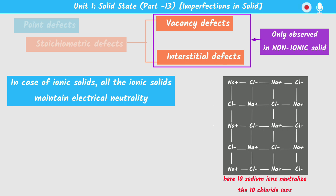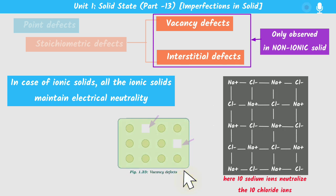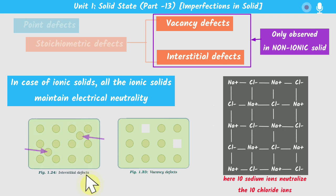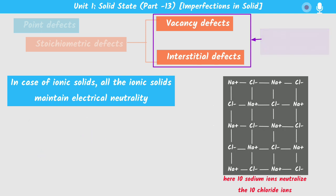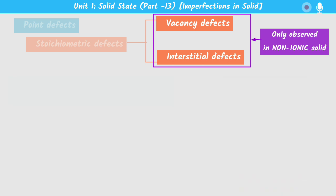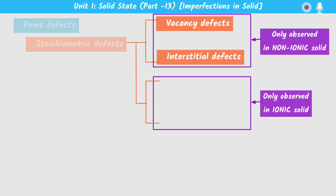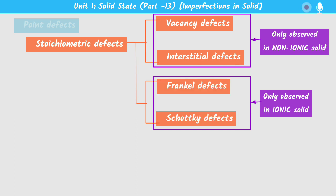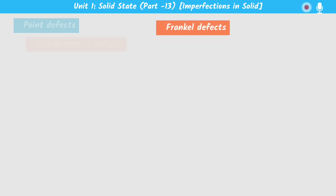If we remove, say, two sodium positive ions in vacancy defects, the electrical neutrality will be disturbed. Similarly, in interstitial defects, if we introduce only two sodium positive ions or only two chloride negative ions, the electrical neutrality will again be disturbed. That is why vacancy and interstitial defects can only be exhibited by non-ionic solids.